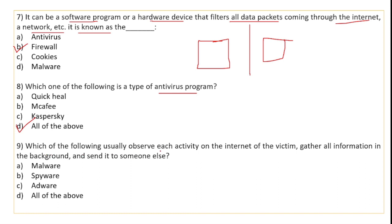Which of the following usually observes each activity on the internet of the victim, gathers all information in the background, and sends it to someone else? The answer is spyware. Spyware works as a spy — it notes every activity you perform on your system, gathers all the data, and sends it so that a particular person can access that data.